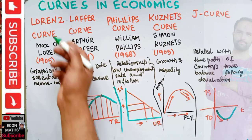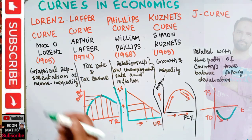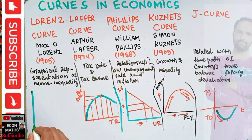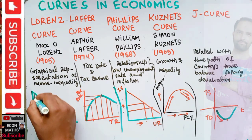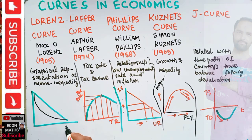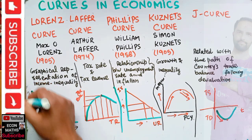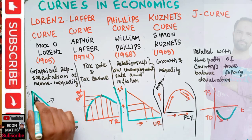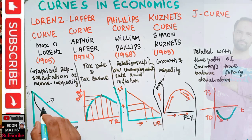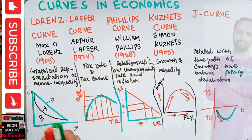Then we have the Lorenz curve. It was given by Max Lorenz. It shows the graphical representation of income inequality. We have the line of perfect equality, and then we have the Lorenz curve. On one axis we have the cumulative share of people from lowest to highest income, and on the other axis we have the cumulative share of income earned. The gap between the line of perfect equality and the Lorenz curve represents income inequality.